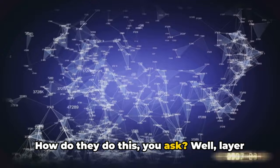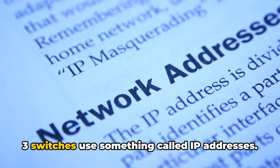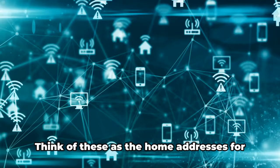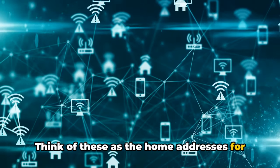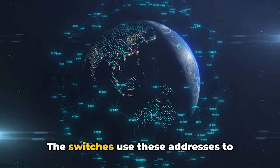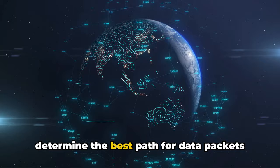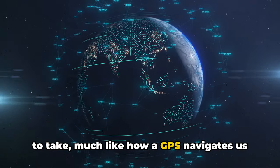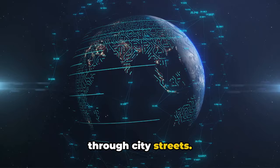How do they do this, you ask? Well, layer 3 switches use something called IP addresses. Think of these as the home addresses for devices in a network. The switches use these addresses to determine the best path for data packets to take, much like how a GPS navigates us through city streets.